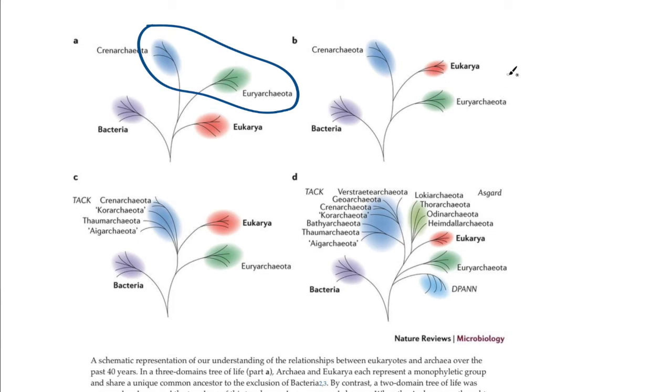With more genetic analyses, a lot of scientists think that the eukaryotes emerge from within the archaea. So these two branches here represent the archaea, and the eukaryotes are within them.